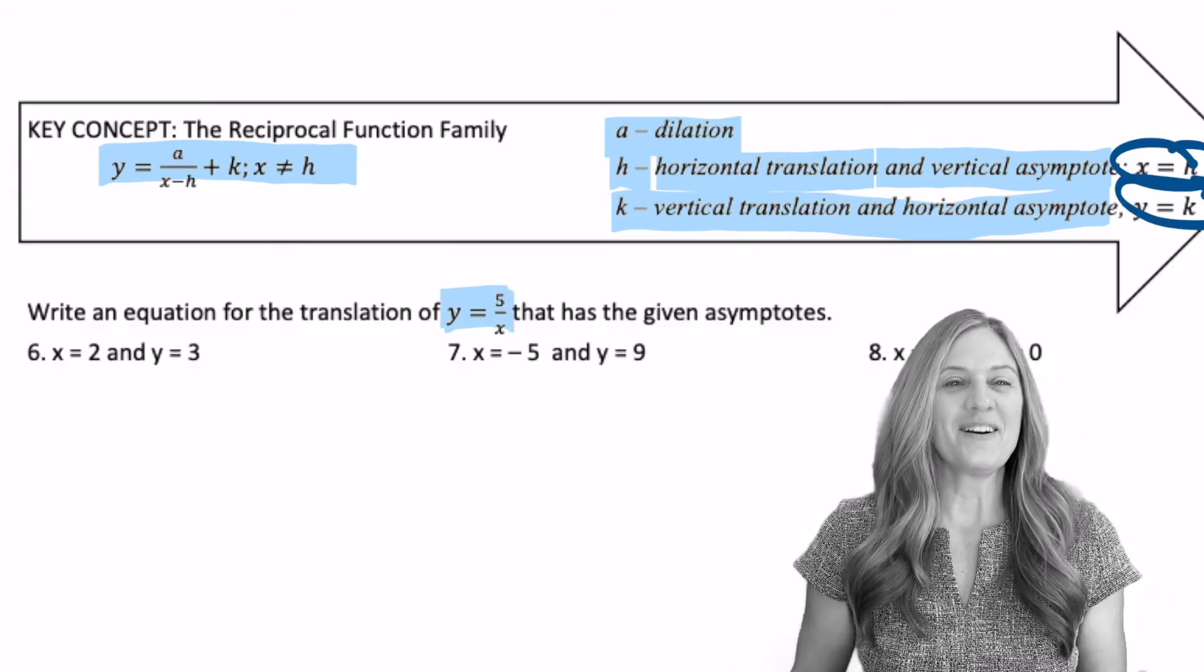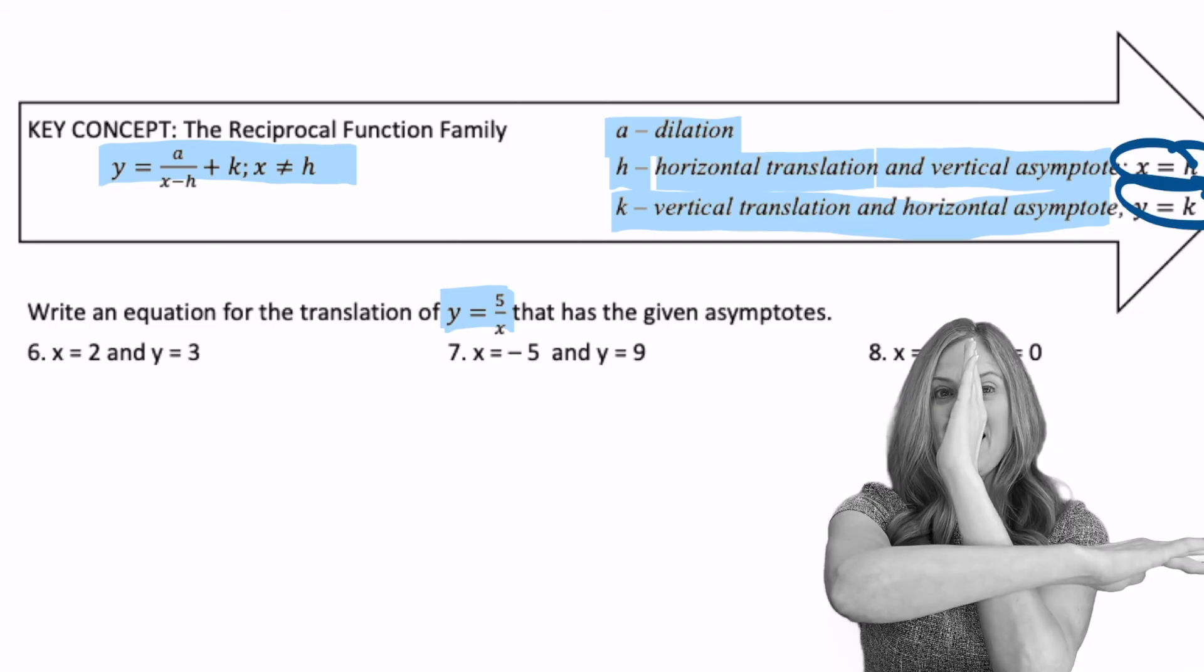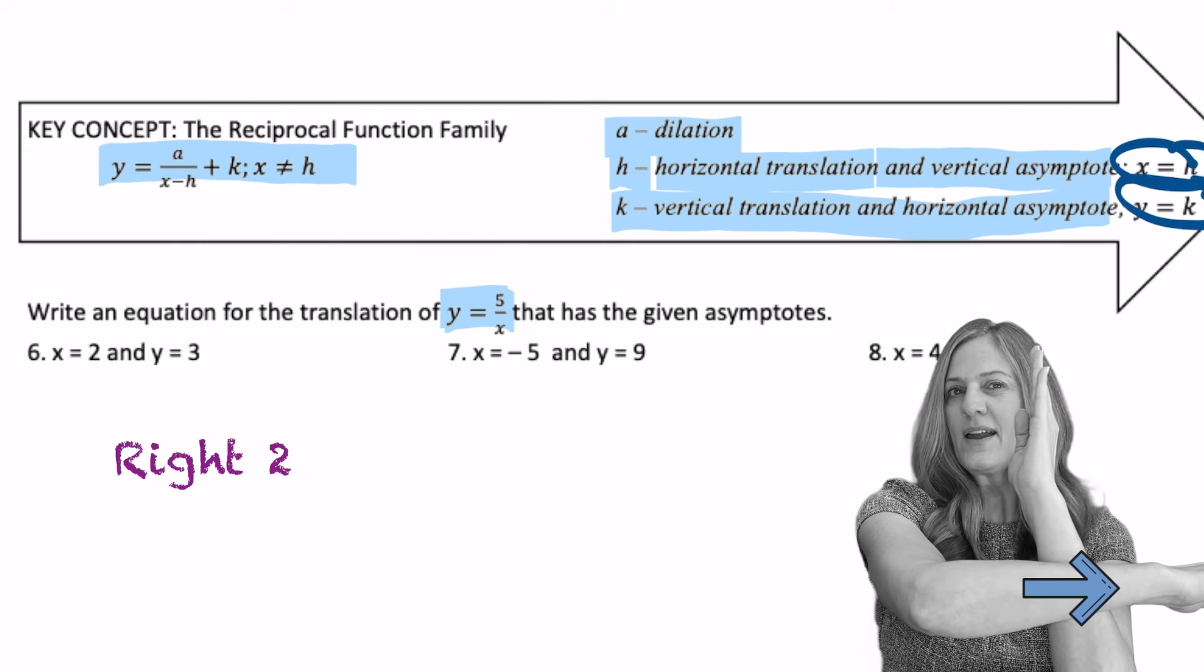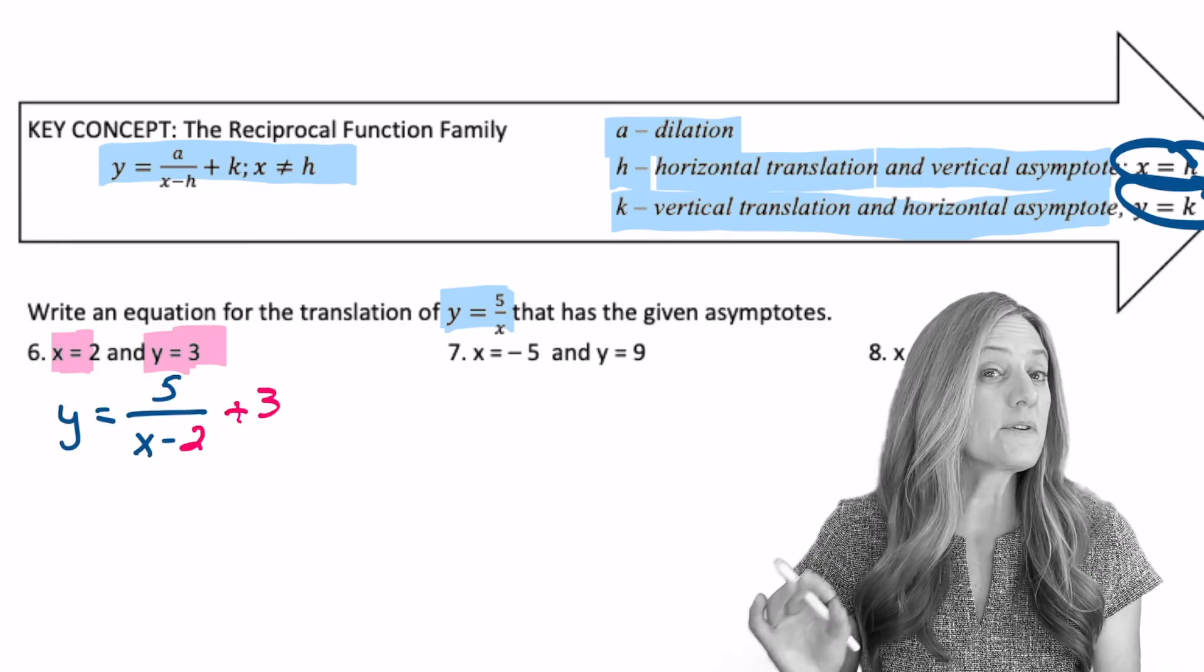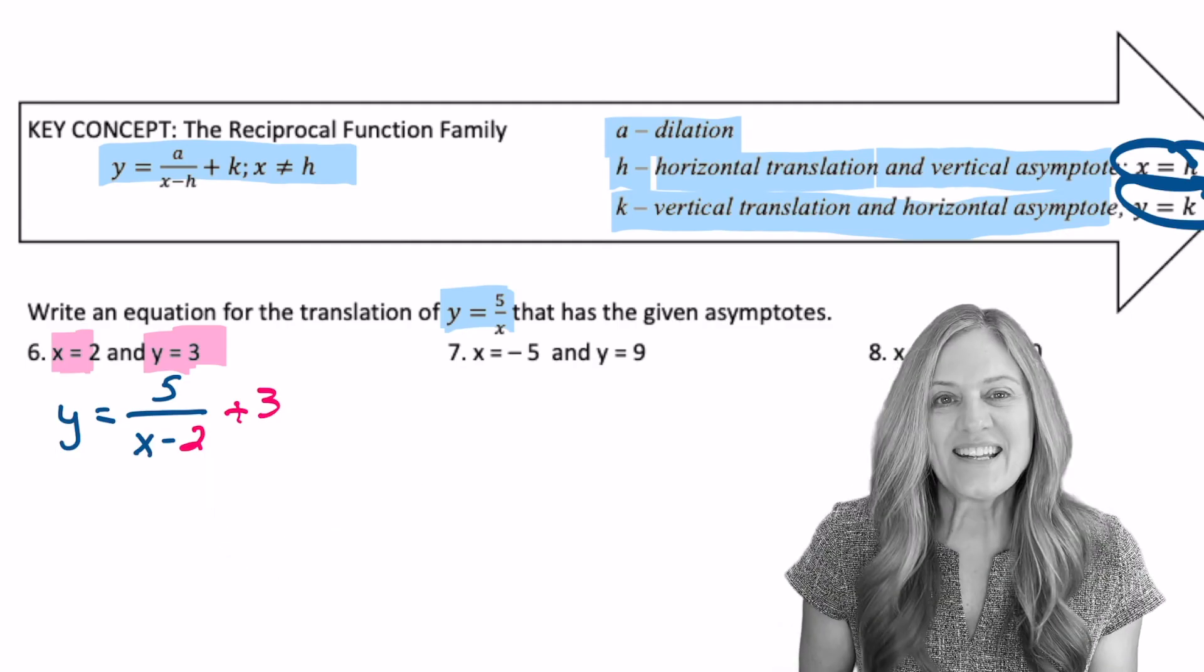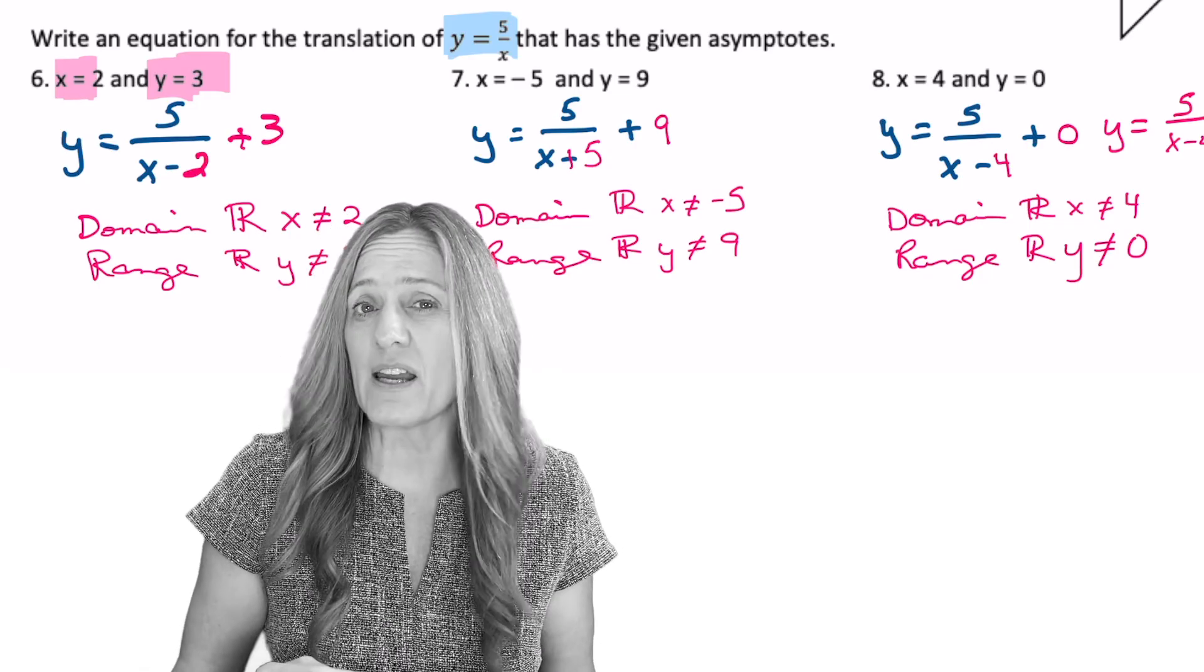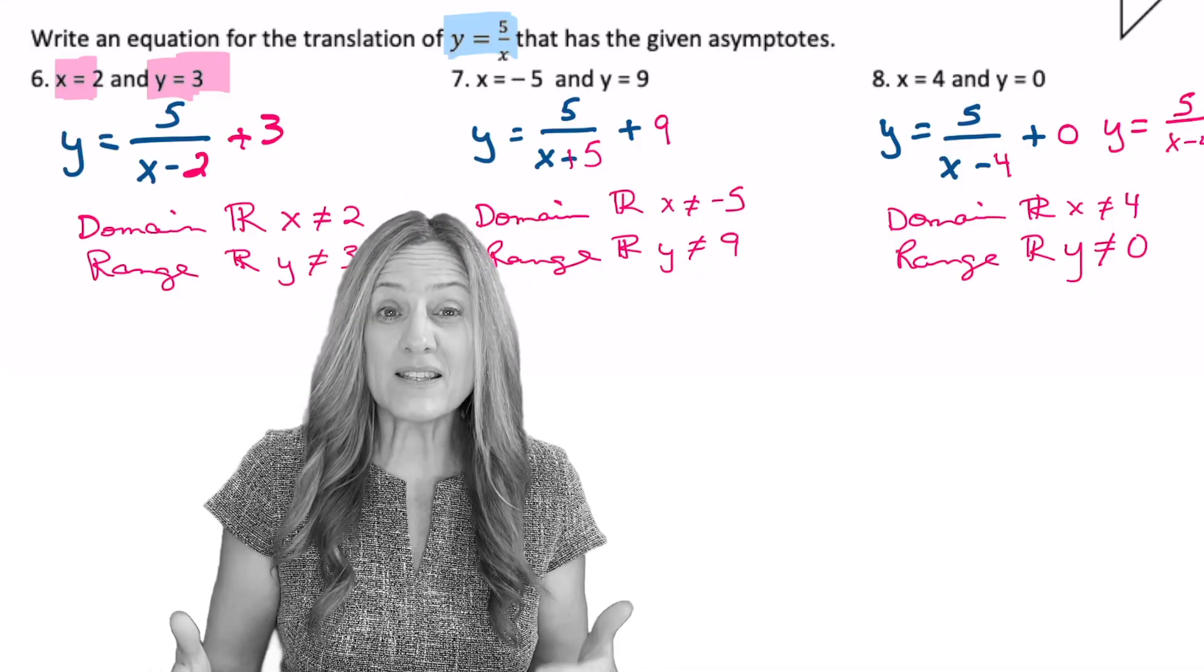Let's think about this. Our original asymptotes are at 0 and 0, right? x equals 0, y equals 0. Well, now it's x equals 2. So that means I went to the right 2. And y equals 3. I went up 3. We're ready to plug into the equation. y equals 5 divided by x minus 2 plus 3. Try 7 and 8. Check your answers. Notice I wrote in domain and range just to emphasize. Once we know the asymptotes, we know the domain and range of our reciprocal function family.